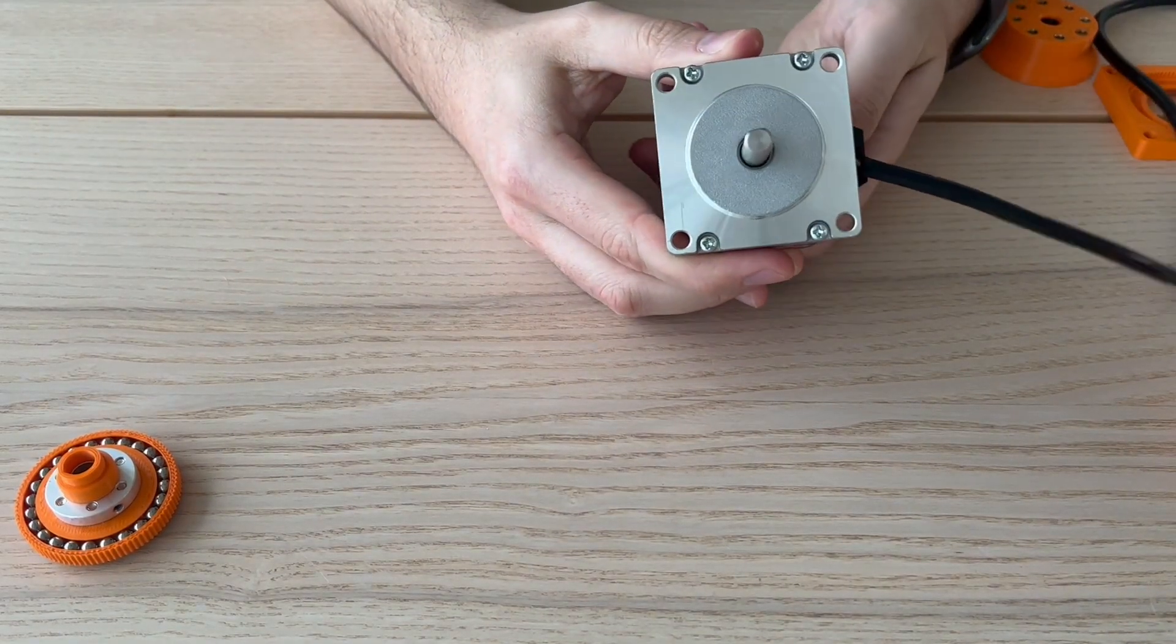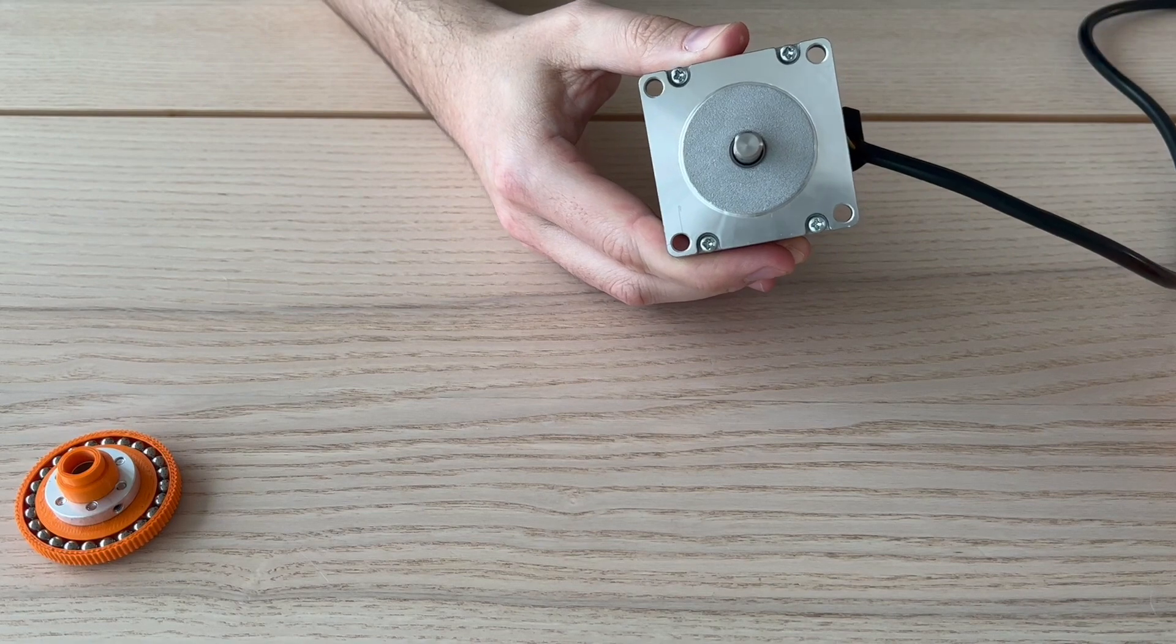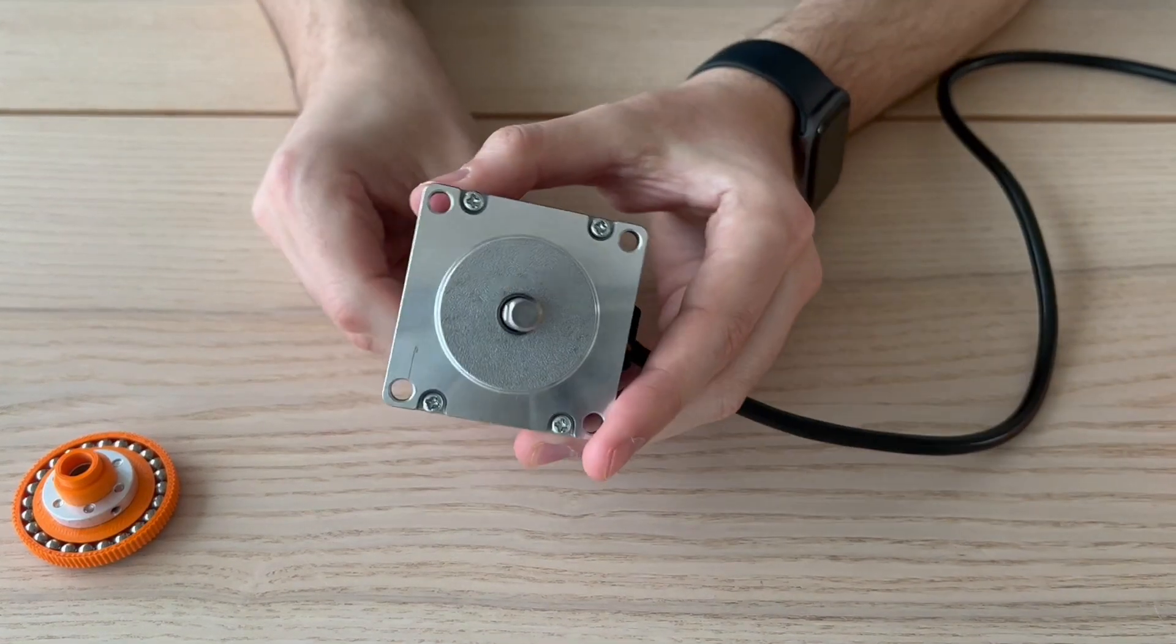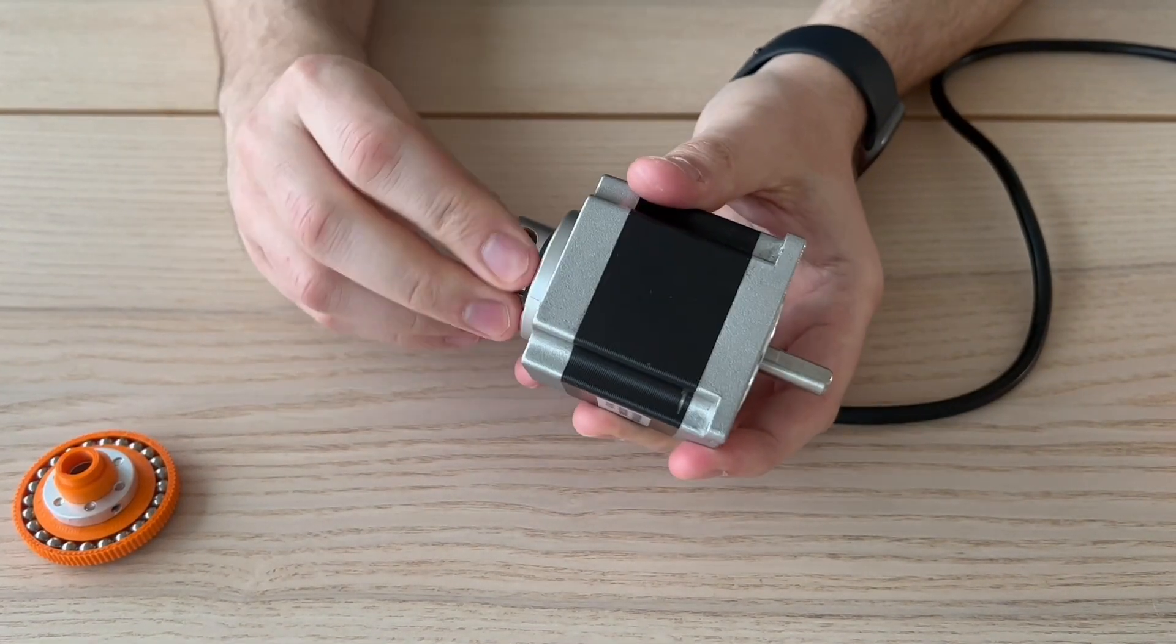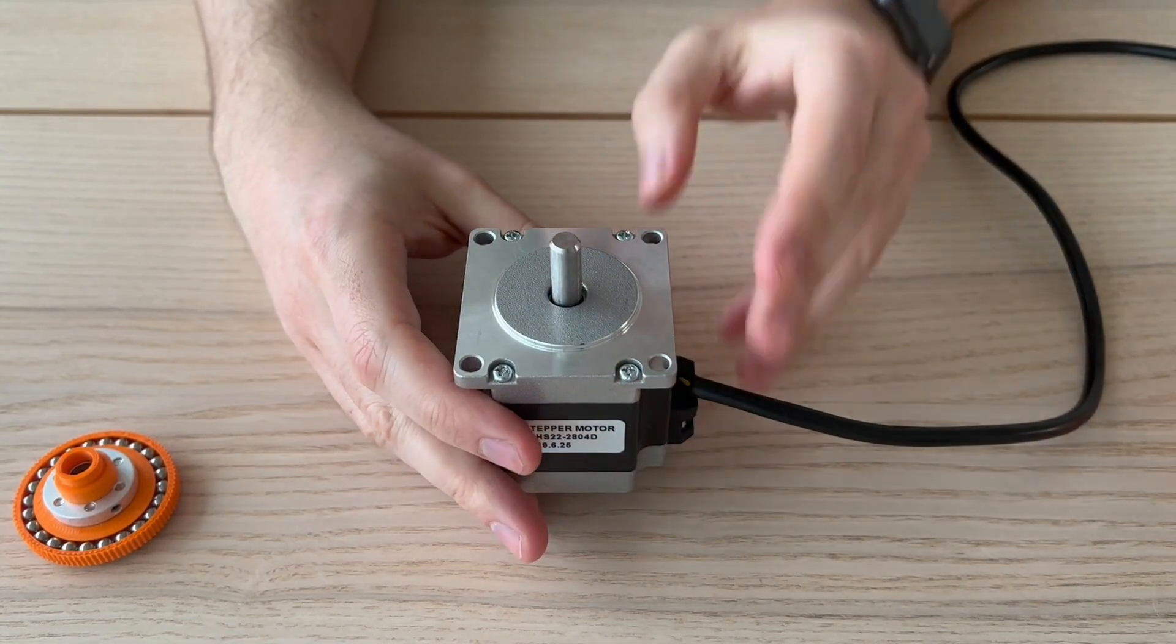This is a NEMA 23 stepper motor dual axis. I chose this type to show you the movement when the stepper motor axis rotates.